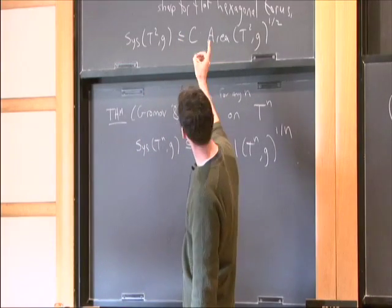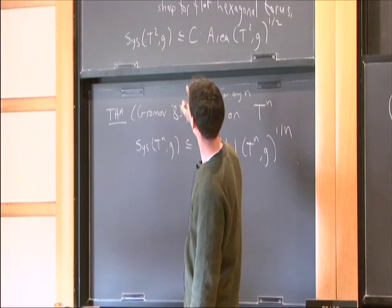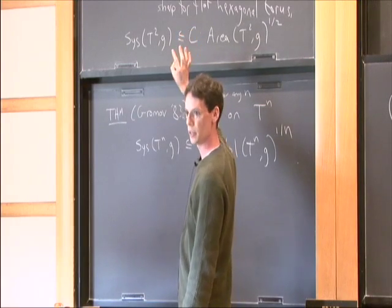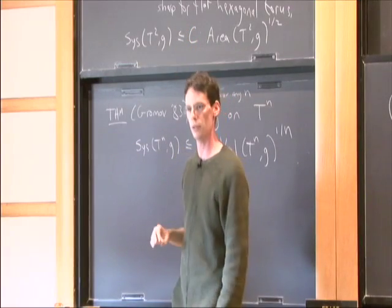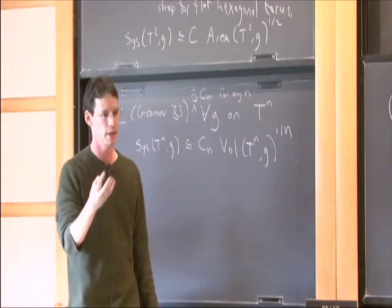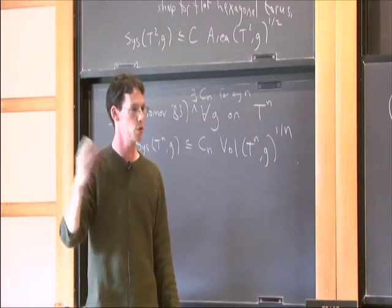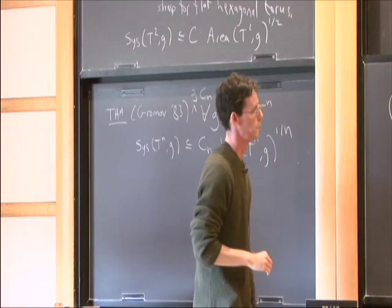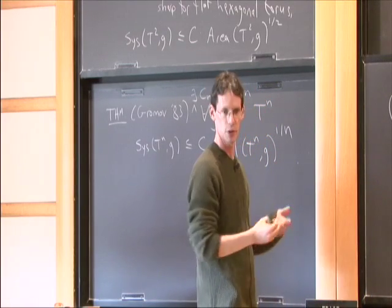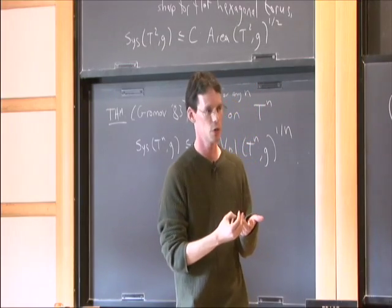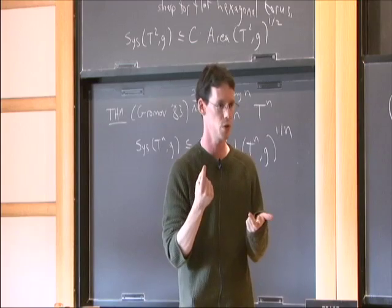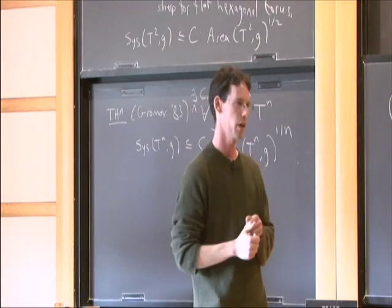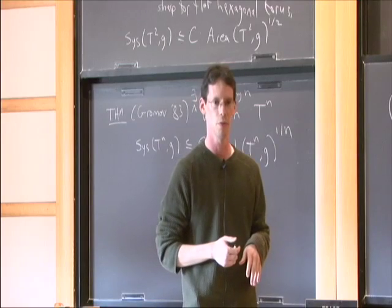The proof of Lovner's theorem uses the uniformization theorem, then a clever argument shows the original systolic ratio is worse than the flat case, and you analyze the flat guys by hand. Another thing that stops happening in three dimensions is that you lose the uniformization theorem, and there's no substitute for it. Metrics can be more complicated — in two dimensions curvature is given by a number, while in three dimensions it has six components.